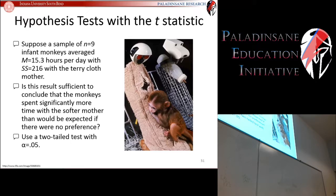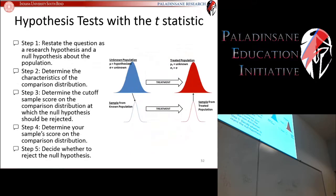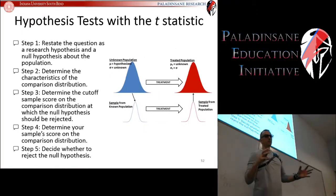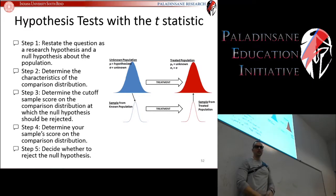We're going to use a two-tailed test with an alpha of 0.05. So we go back to our five-step procedure.